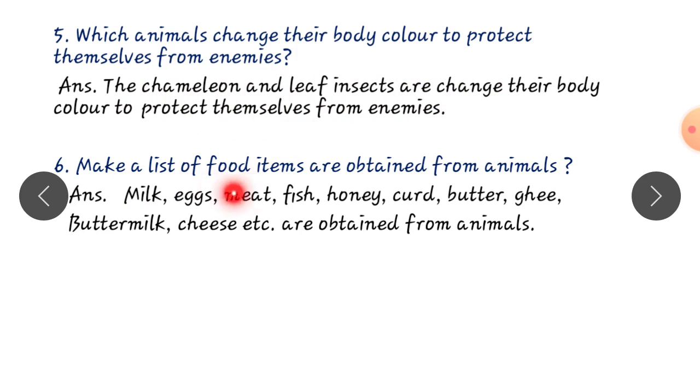Make a list of food items are obtained from animals. Animal products children. These all are example for animal products. They are milk, egg, meat, fish, honey, curd, butter, ghee, buttermilk, cheese. These are examples for animal products. And then also maybe I am asking plant products also.